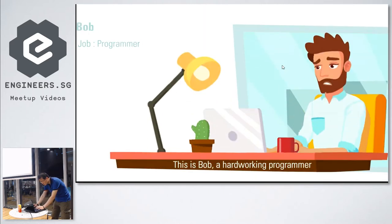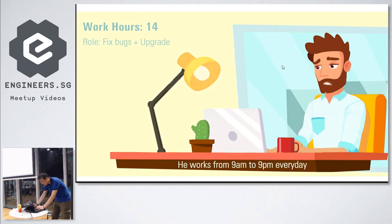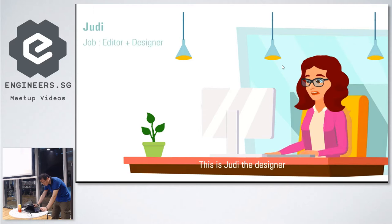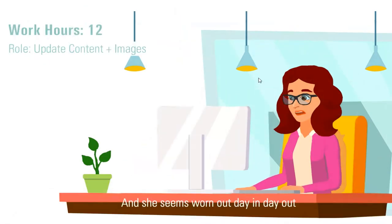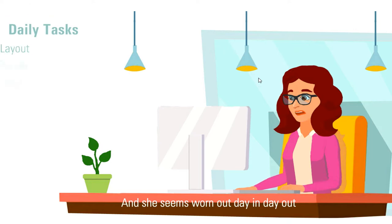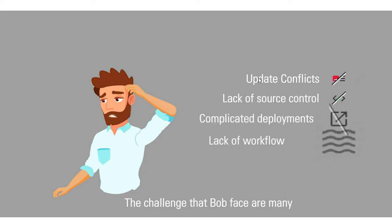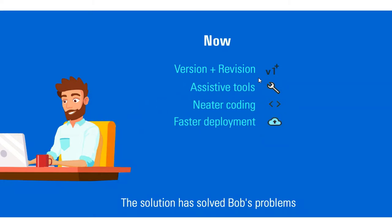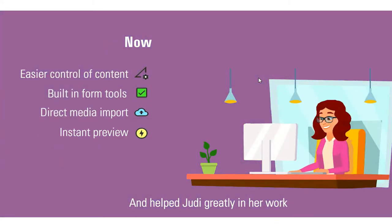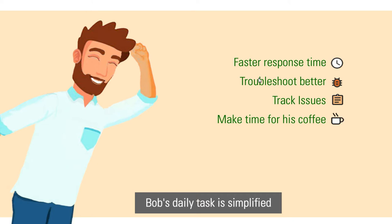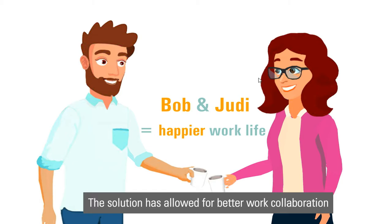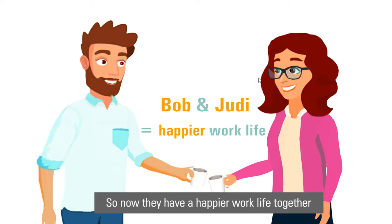This is Bob, a hardworking programmer. He works from 9 a.m. to 9 p.m. every day and seems stressfully busy. This is Judy the designer — she does graphics and content and seems worn out day in and day out. With over 20 daily tasks, they are overloaded with tedious work. Now they've found a solution that solved Bob's problems and helped Judy greatly. Bob's daily tasks are simplified, Judy finds better editing and content control, and they now have a happier work life together.